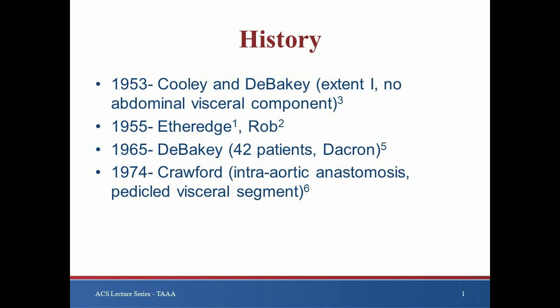The first successful repair of a thoracoabdominal aortic aneurysm in the United States was reported in 1955 by Etheridge. Utilizing a 5mm aortic shunt, an in situ aortic homograft repair of an extent 4 aneurysm was performed via a thoracoabdominal incision. This included anastomosis of the celiac and superior mesenteric arteries.